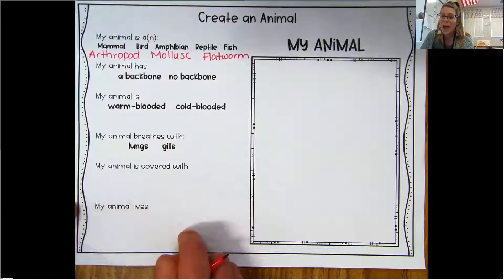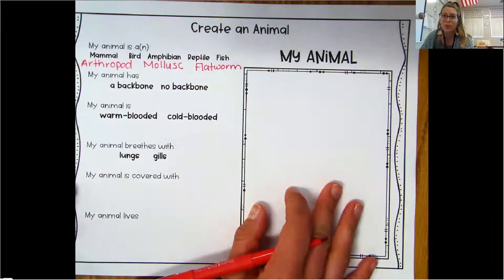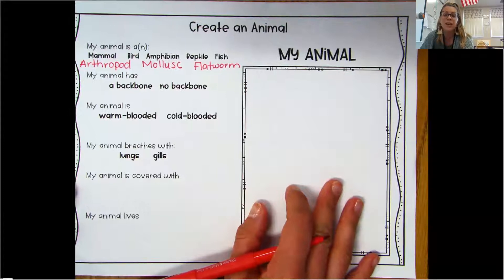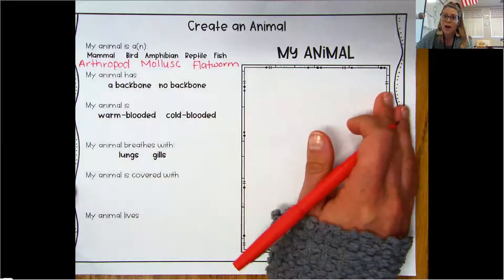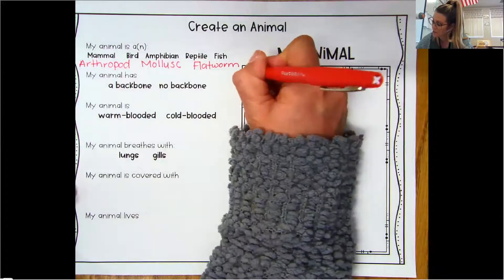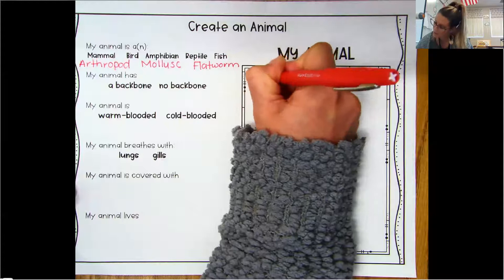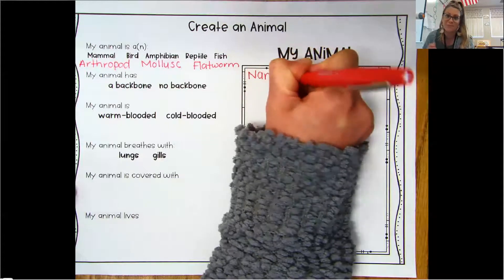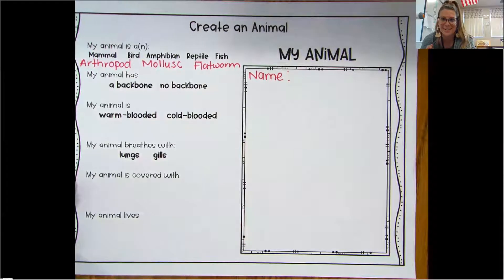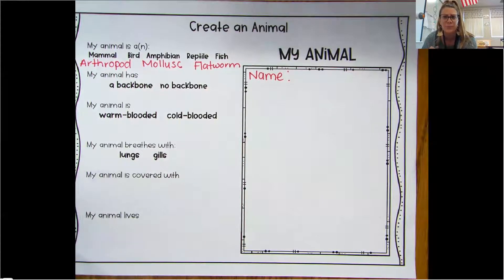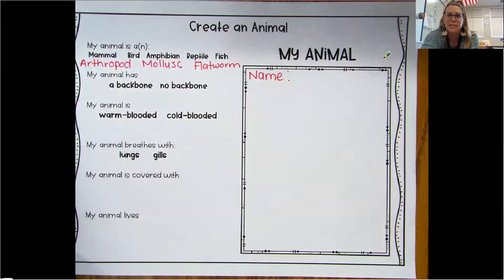And then draw a picture of your creation. You can even write the name of your animal up at the top. So let's just put name. Come up with a creative name, too. All right. I cannot wait to see your new animal. And I will be researching it and seeing if I can classify it. All right. Have fun, you super scientists. Get creative. Bye.